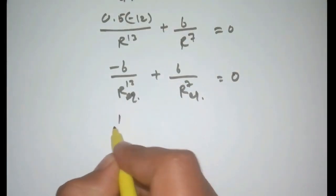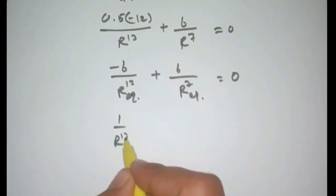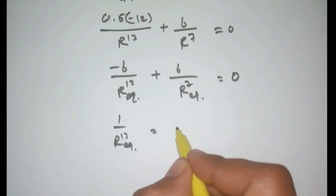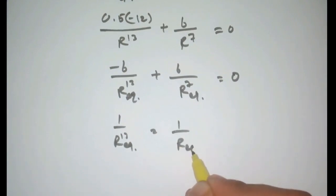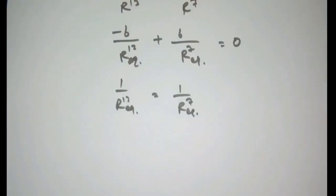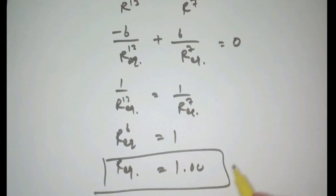So it becomes 1 upon R^13 equal to 1 upon R^7. This can be written as R^6 equal to 1. So R equilibrium is equal to 1.00. So that is your right answer.